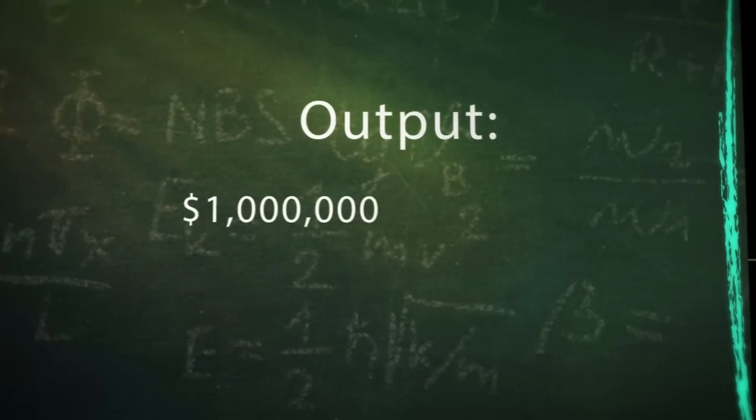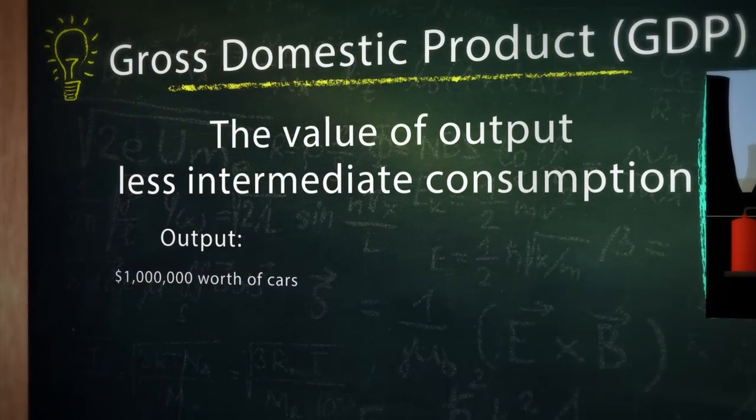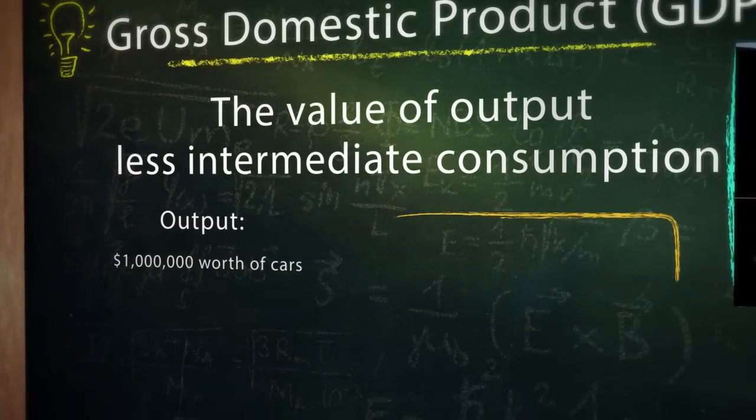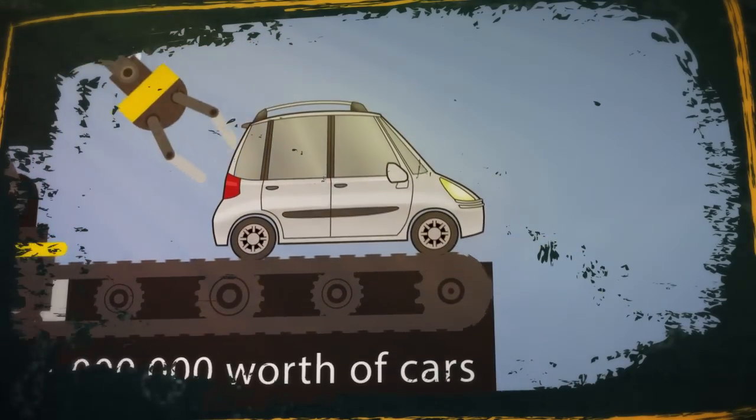That $1 million in the production of cars is considered to be the output. Let's return to the definition. GDP is the value of output, in this case the value of the cars, less intermediate consumption. So, what is intermediate consumption?